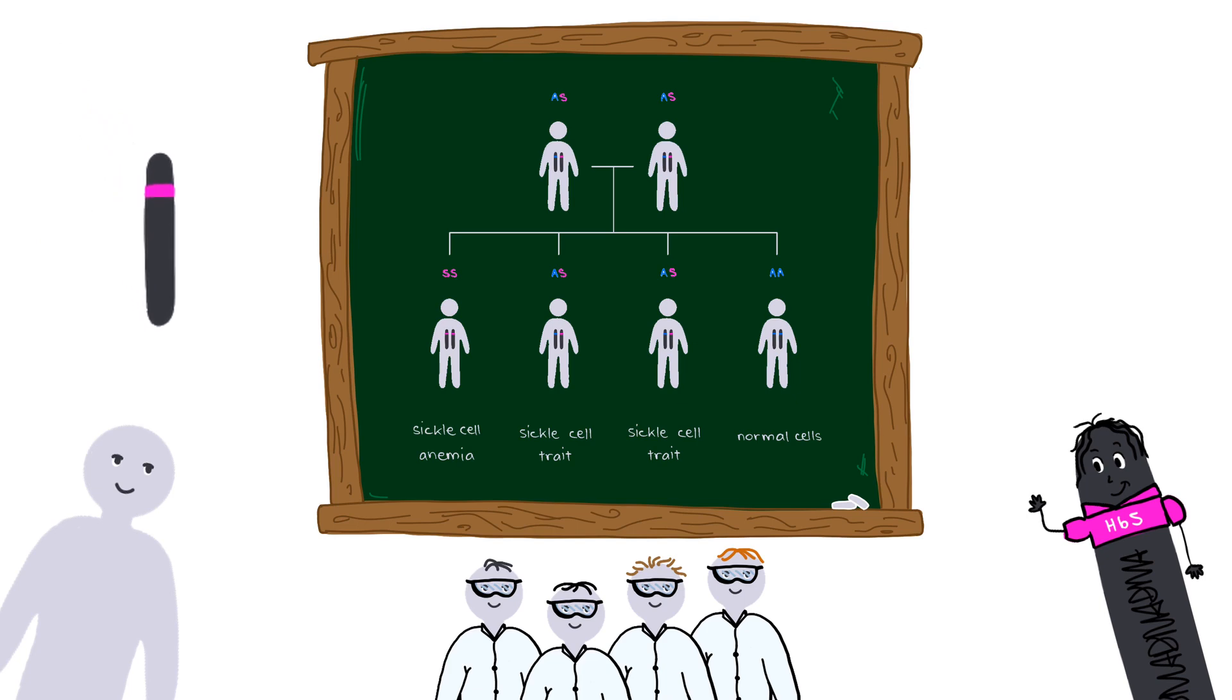If you inherit two copies of me, both beta-globin subunits will be hemoglobin S, so you'll have sickle cell anemia. Inheriting one copy of the HBA allele and one of the HBS allele will give you the sickle cell trait, and two copies of the HBA allele will give you normal hemoglobin.